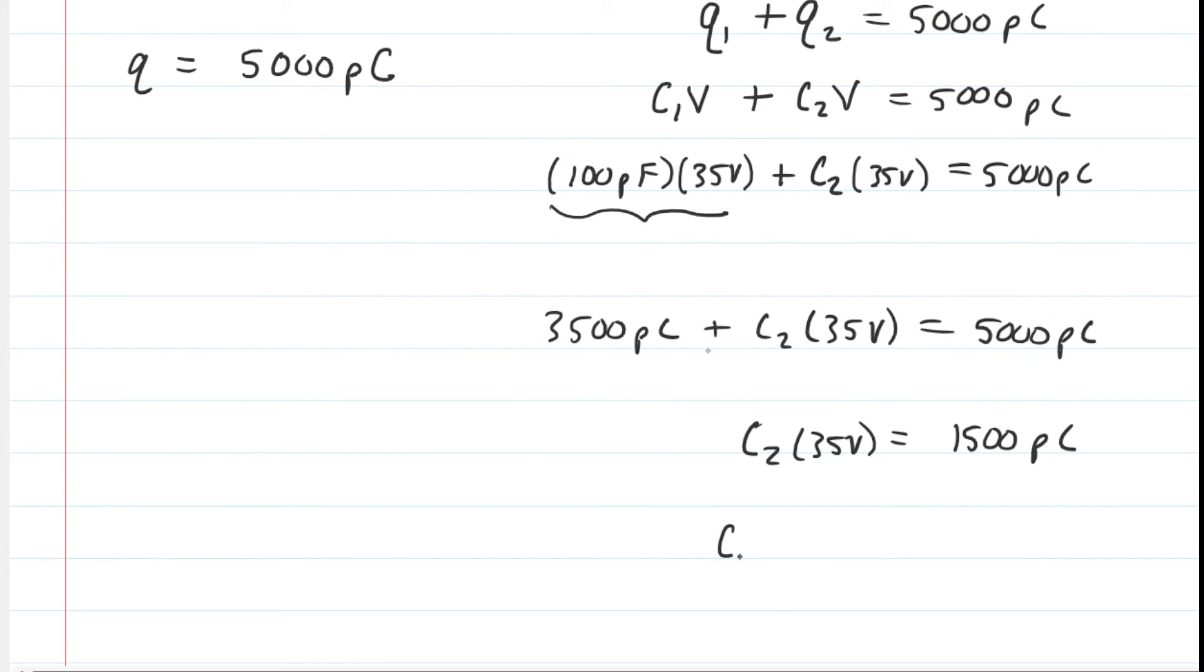And then when you divide both sides by the 35 volts, you will see that C2 is approximately 42.9. And this is a capacitance, but it's going to come out in picofarads because we had plugged in picocoulombs into this equation. So this is the correct answer for the capacitance on C2.